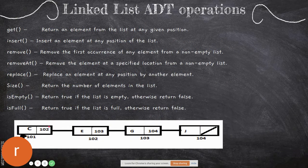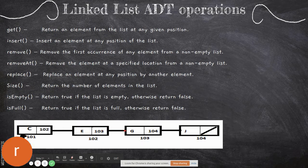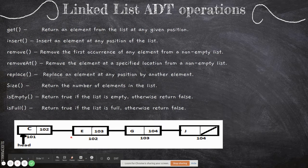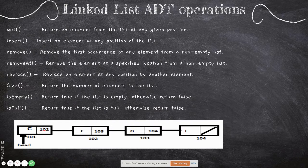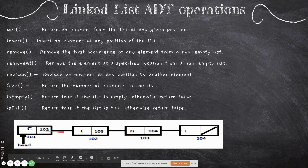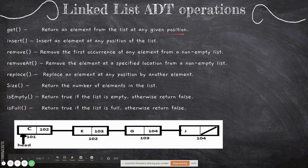One more example is linked list. A linked list consists of two fields: the information field and the next field, which points to the memory location of the next element. For example, elements of the same type are created and stored in different memory locations. C is the first one, pointed to by the head. The next element's memory location is stored in the next field. So C is the information field and next is the next field, which points to the next element — for example, memory location 103. This is why they are called linked — they are linked by memory locations.